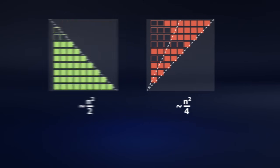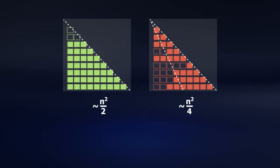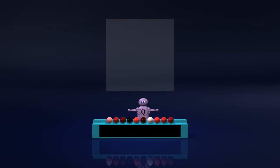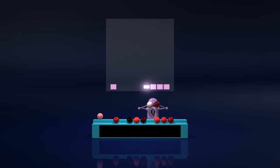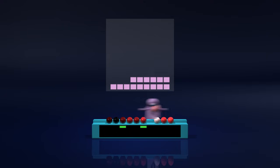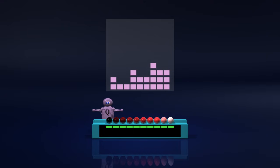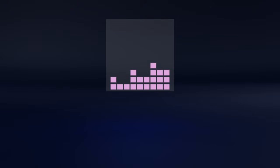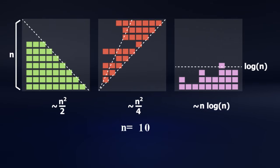So no wonder Insertion Sort won. Now let's draw a similar chart for an algorithm we've shown in previous videos: Quick Sort. Thanks to its divide and conquer strategy, the height of this chart is proportional to log n on average. So the total number of comparisons is proportional to n log n on average. The difference between n log n and n-squared gets more pronounced as n grows.